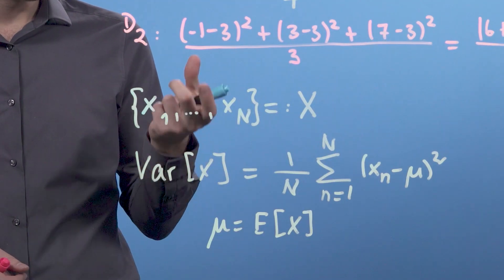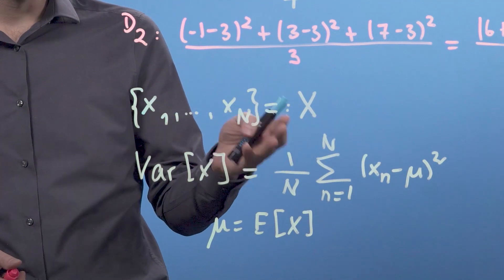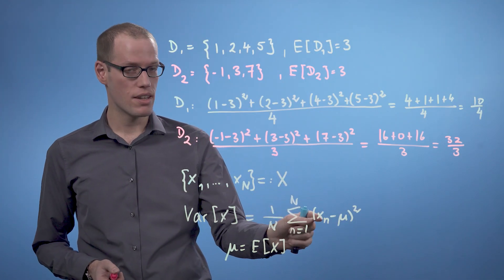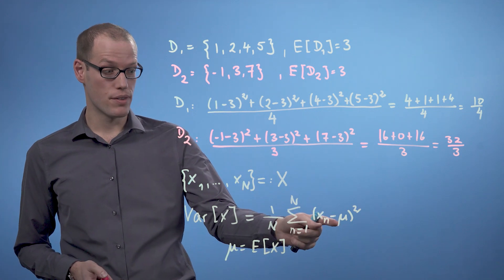So what we have done here is exactly the same as what we did before with D1 and D2. We computed an average squared distance of the data points in the data set from the mean value of the data set.